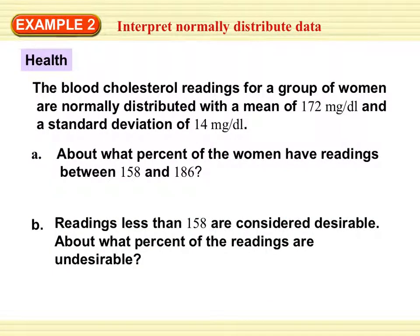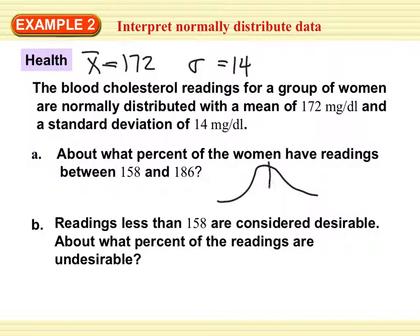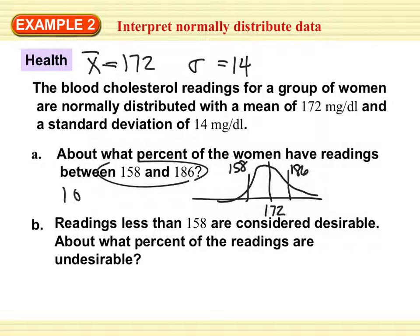Next example: the blood cholesterol readings for a group of women are normally distributed with a mean of 172 and a standard deviation of 14. About what percent of the women have readings between 158 and 186? If I add 14 to 172 I get 186, and if I subtract 14 I get 158. So 158 and 186 are within one standard deviation of the mean, which means 68% of the women are in this shaded part — because one standard deviation above and below the mean is 68% of the total area of the normal curve.